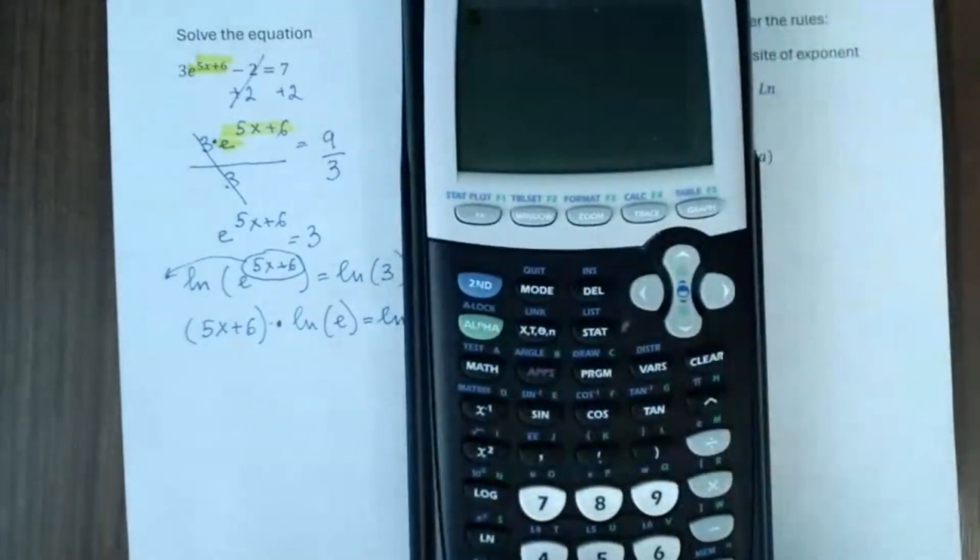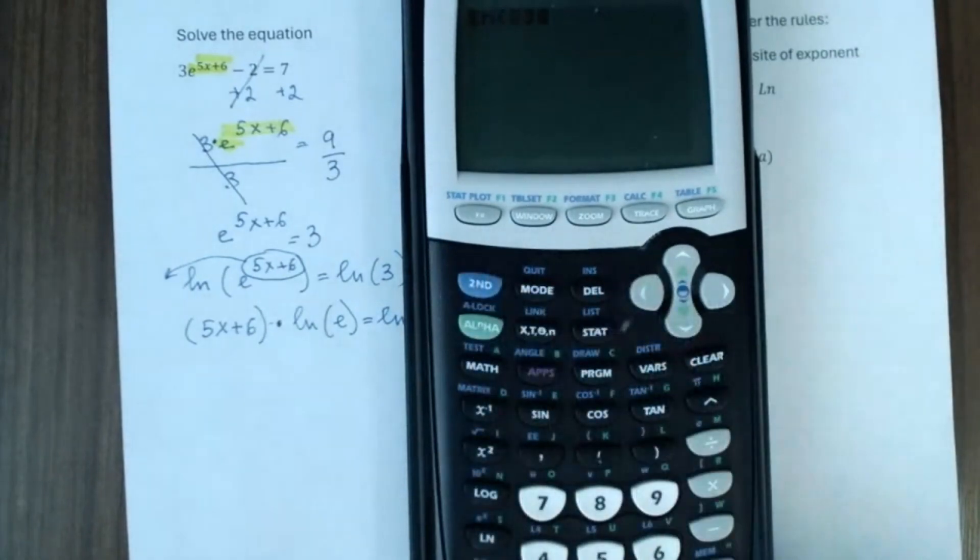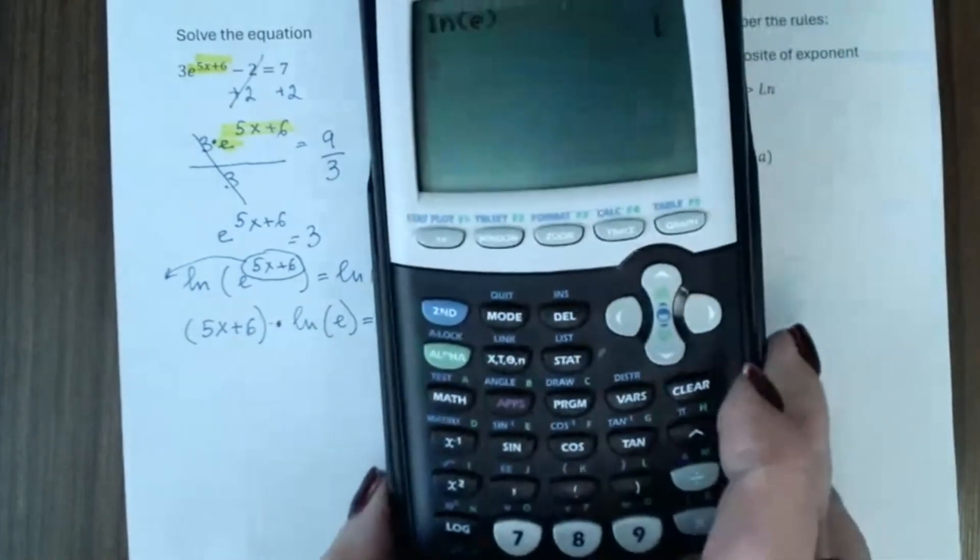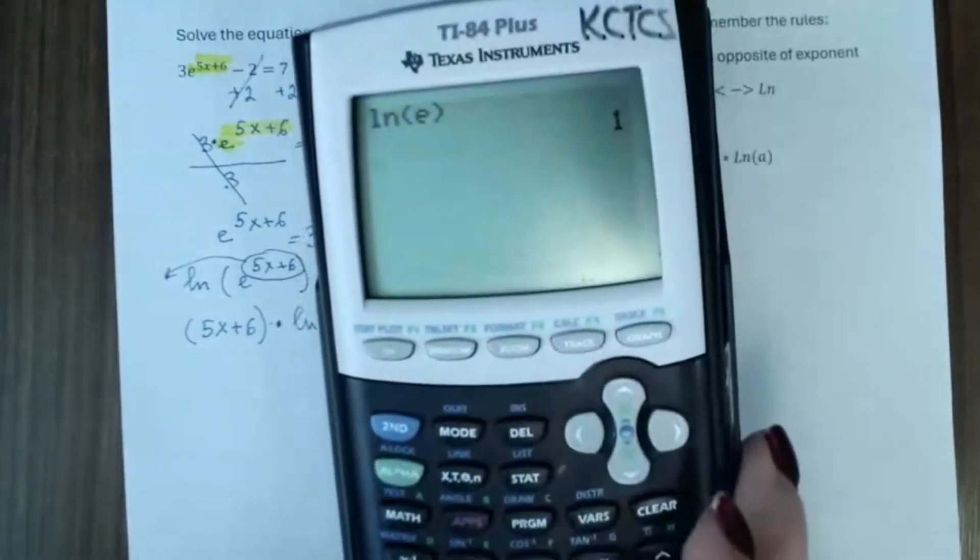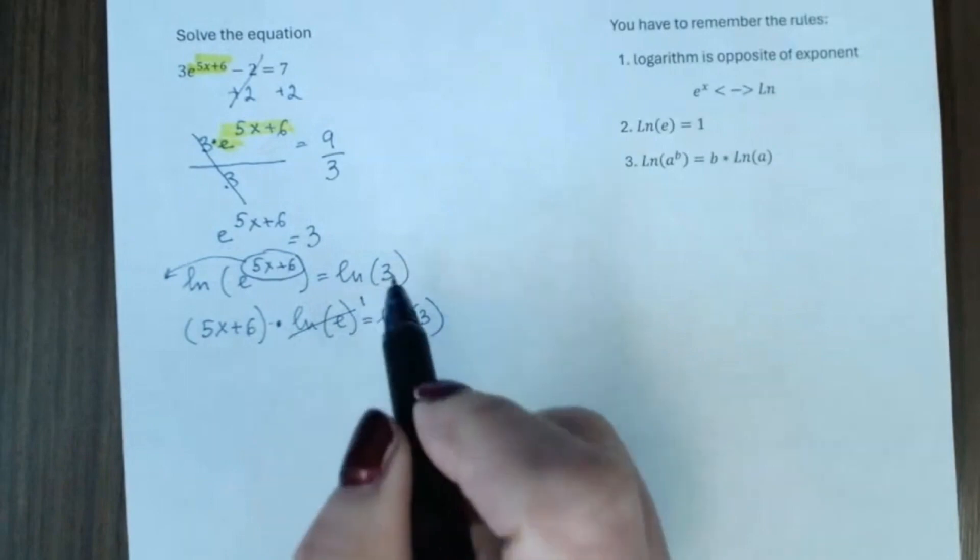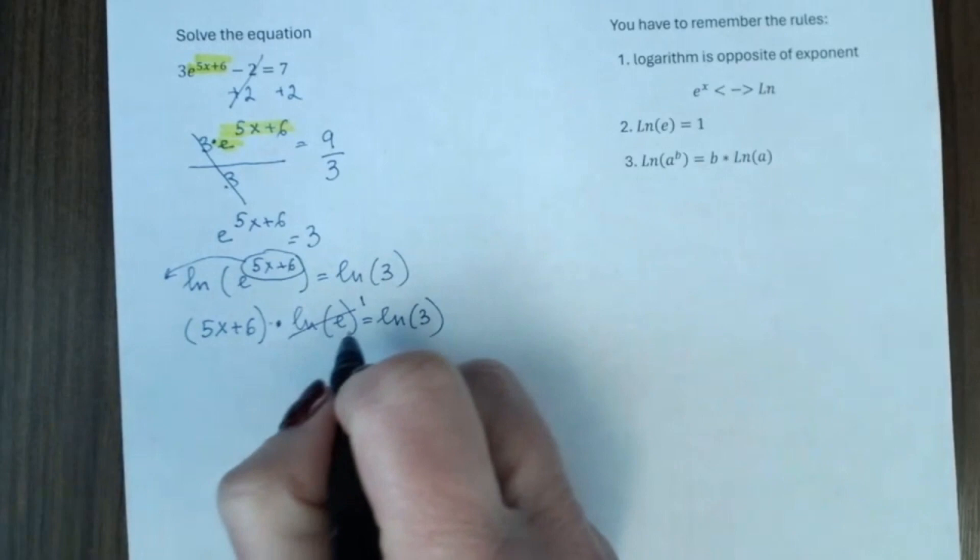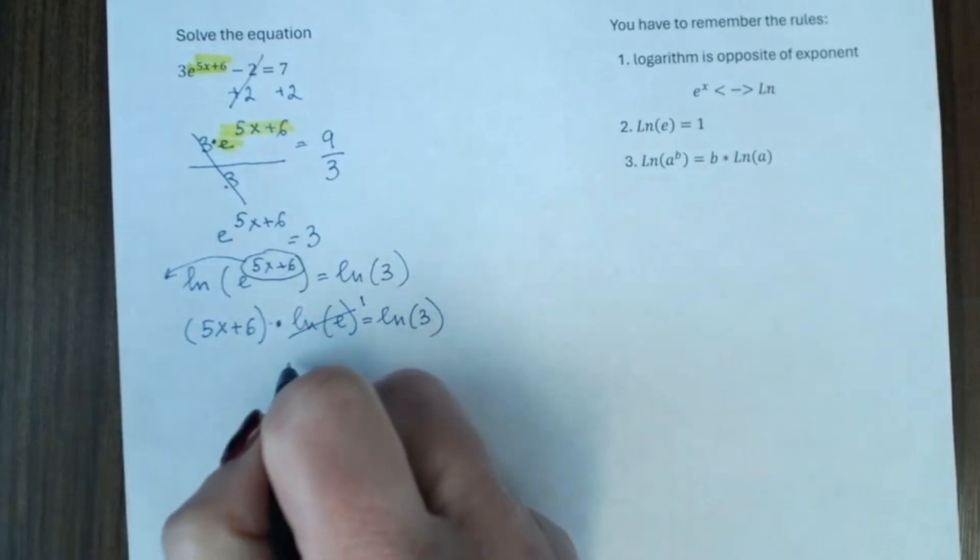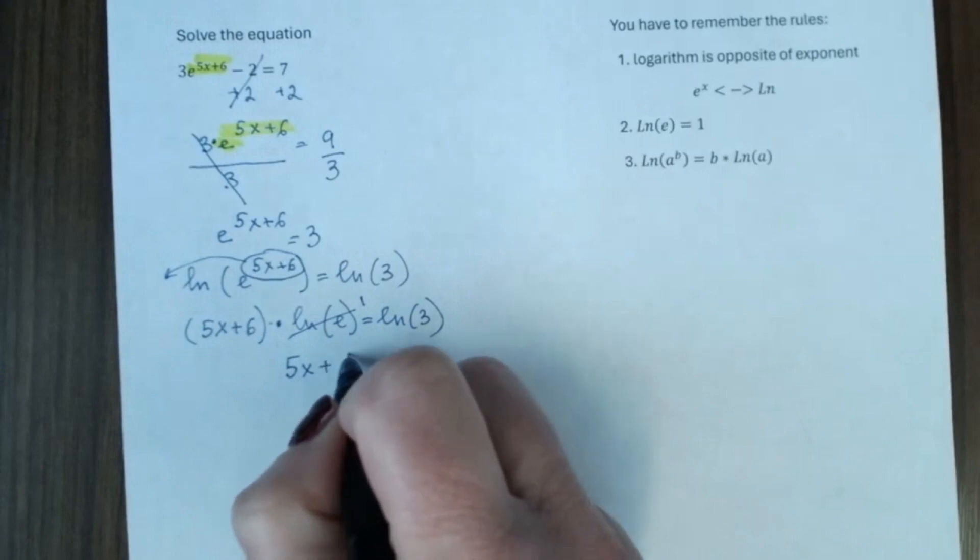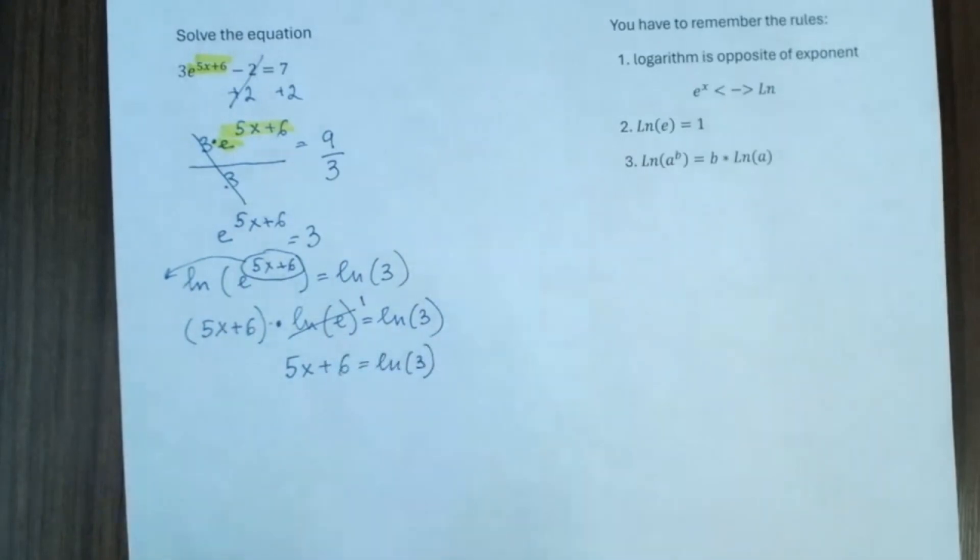And again, one more time. Natural logarithm of e is equal to 1 because the opposite is the second rule. And when you multiply anything by 1, it doesn't change. So, we can get rid of natural logarithm of e. And on the left, we will have 5x plus 6 is equal to natural logarithm of 3.